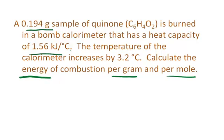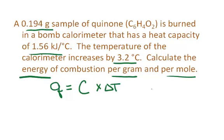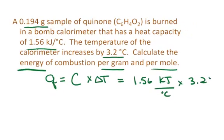That is the absolute heat capacity for that particular device — we do not have to include water here. The temperature of the calorimeter increases by 3.2 degrees Celsius. To calculate the energy of combustion, first we calculate the heat energy liberated: heat energy equals the heat capacity of the calorimeter times the change in temperature. We do not have to multiply by the mass of water because the calorimeter has been calibrated as a unit. So this is a simple calculation: 1.56 kJ per degree Celsius times 3.2 degrees Celsius.